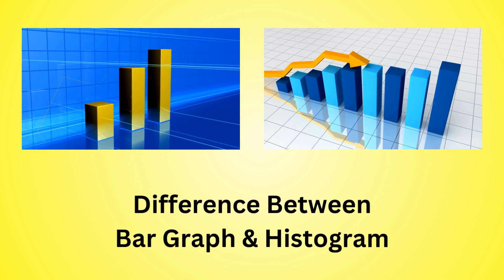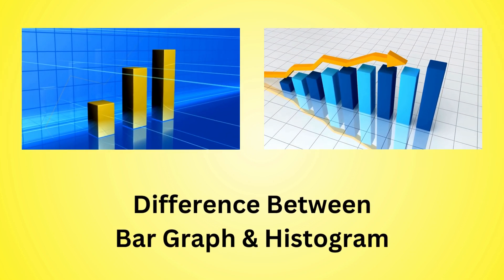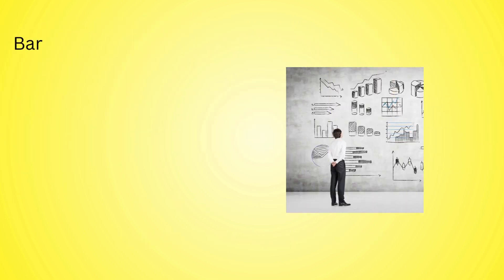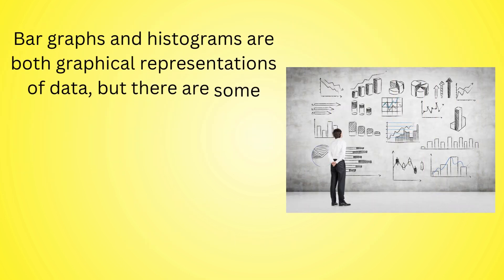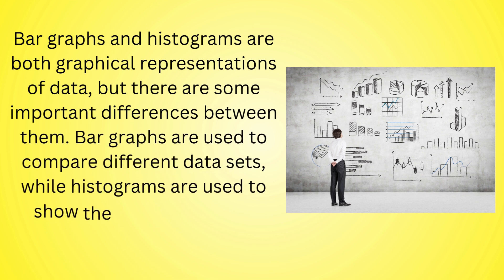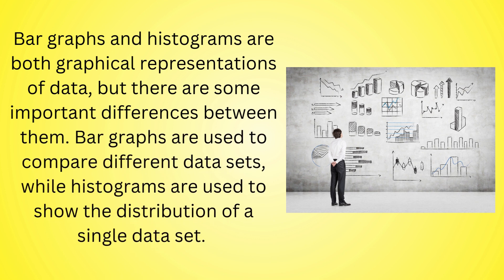Difference between bar graph and histogram. Bar graphs and histograms are both graphical representations of data, but there are some important differences between them. Bar graphs are used to compare different data sets, while histograms are used to show the distribution of a single data set.